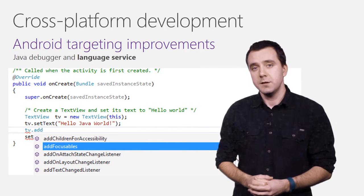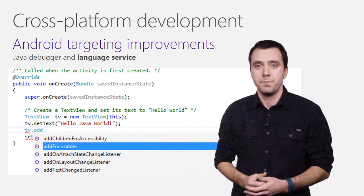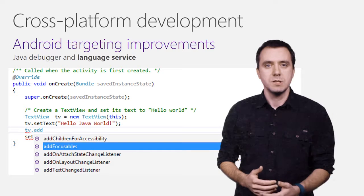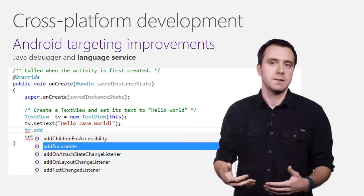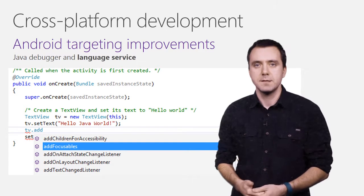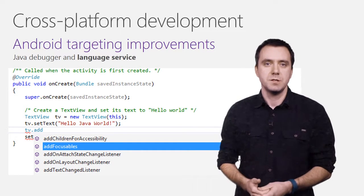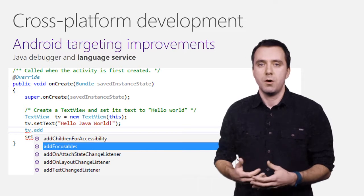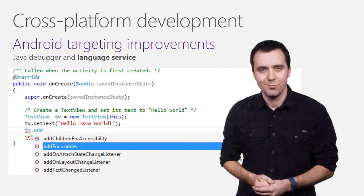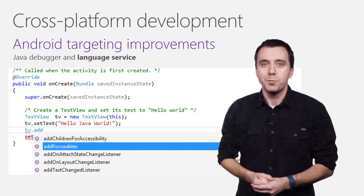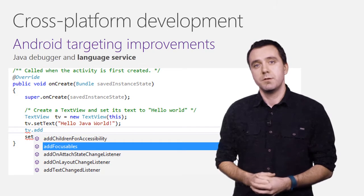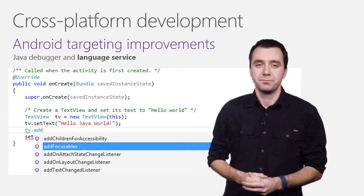When editing code, you will also have access to semantic colorization and highlighting. IntelliSense operations like autocomplete, go-to-definition, errors and warning squiggles are all available in the Java files. This support comes as a Visual Studio extension available for download in Visual Studio Gallery.